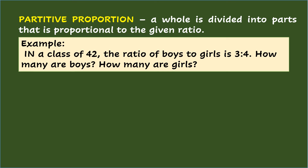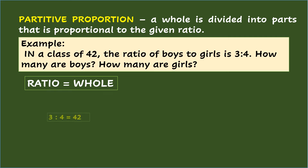Word problems involving partitive proportion happen when a whole is divided into parts that are proportional to the given ratio. Example: in a class of 42, the ratio of boys to girls is 3 is to 4. How many are boys? How many are girls? Setting up the partitive proportion, the order ratio equals whole is used. With the given example, the partitive proportion is 3 is to 4 equals 42, wherein 3 pertains to the parts for boys, 4 for girls, and 42 is the whole.